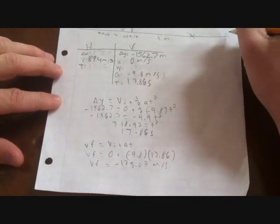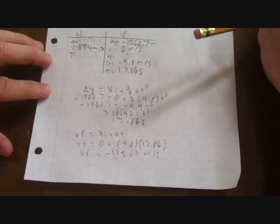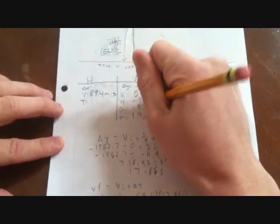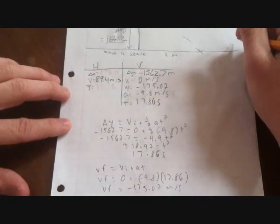Now although you only need four variables in this problem, it's still good to get in the habit of knowing how to solve for all of them. So if you plug them into the linear equations again, you will get negative 175.02 meters per second as your final velocity.